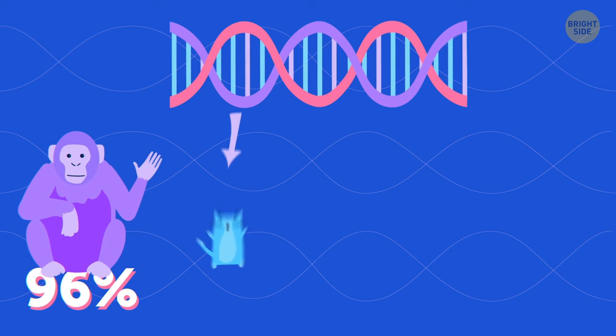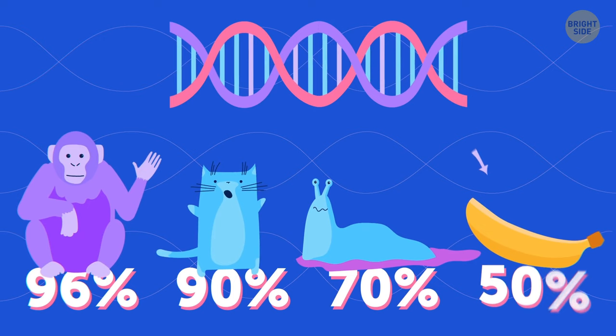Human DNA is 96% similar to a chimpanzee, 90% similar to a cat, 70% to a slug, and 50% to a banana. That has appeal.